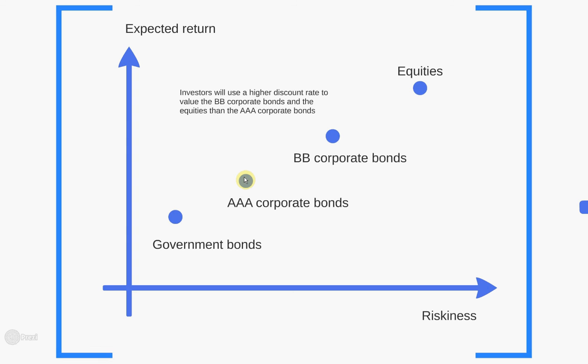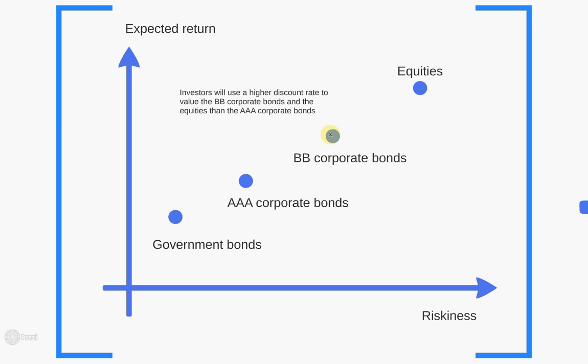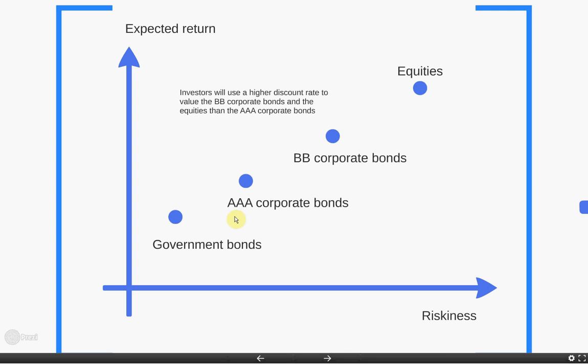Continuing up the scale, we get to BB corporate bonds. The rating scale typically goes triple-A, then double-A, then single-A, then triple-B, then double-B. Double-B is a much less secure bond with a much higher chance of default, so it's much riskier. But on average, if you hold riskier assets you expect to get a higher return, so you'd expect the return on a double-B corporate bond to be higher than a triple-A corporate bond. At the top right of the graph, the most risky of the standard asset classes is equities.